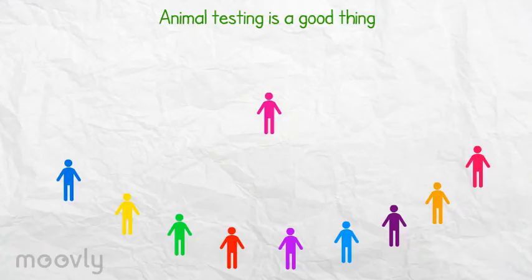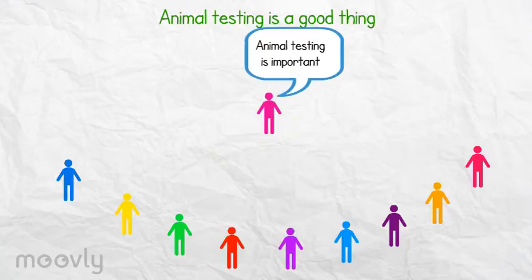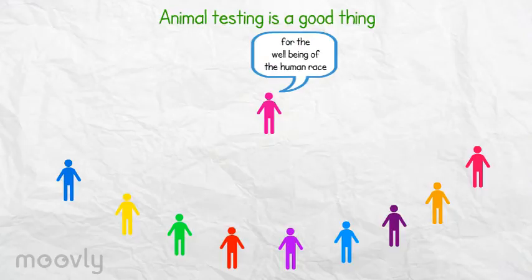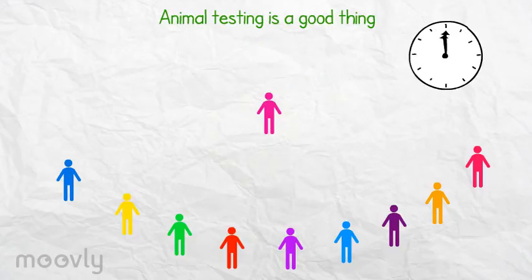He can use the earlier critical questions from the audience as inspiration for new arguments. In this case, he starts with 'animal testing is important for the well-being of the human race.' Also, this presentation will last for a few minutes.